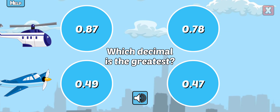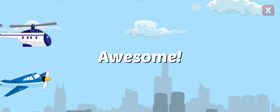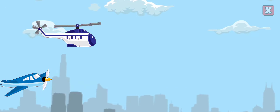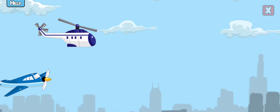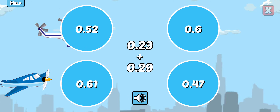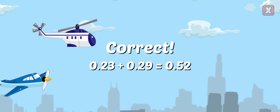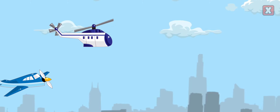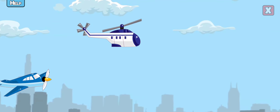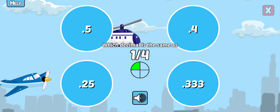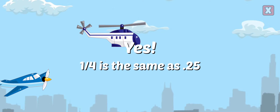Which decimal is the greatest? Awesome! Add these two decimals together. Correct! Which decimal is the same as 1 fourth? Yes! 1 fourth is the same as 0.25.